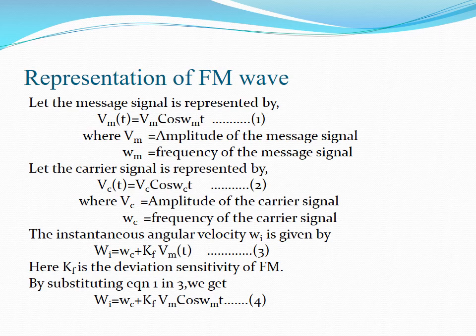We know that the instantaneous angular velocity ωi is given by ωi = ωc + kf·Vm(t), where kf is the deviation sensitivity of FM. Next, we are going to substitute the value of Vm(t) in equation number 3. Therefore, ωi = ωc + kf·Vm·cos(ωm·t). We are considering this as equation number 4.